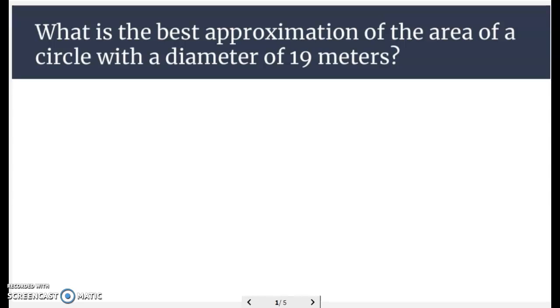Welcome back, everybody. Today we're going to be talking about the area of a circle. Now to find the area of a circle, you take pi, which is 3.14, times the radius squared.